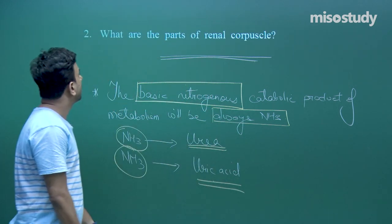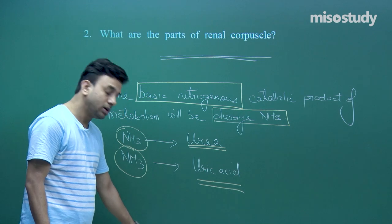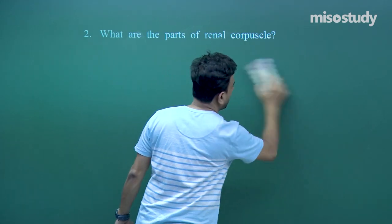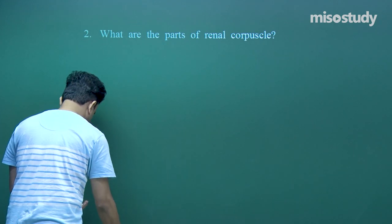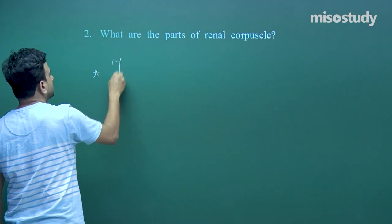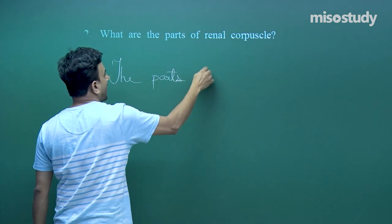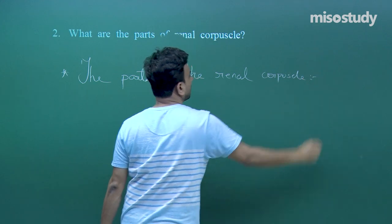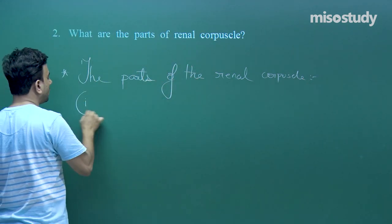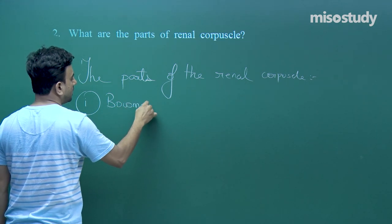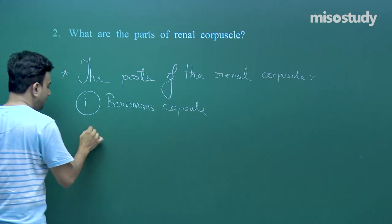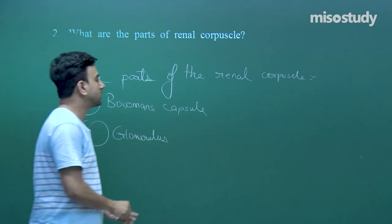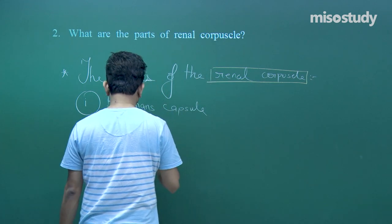We go on to the next question: what are the parts of the renal corpuscle, or the Malpighian corpuscle? The parts of the renal corpuscle will be, first of all, the Bowman's capsule and the other one will be the glomerulus. These two together form the renal corpuscle.